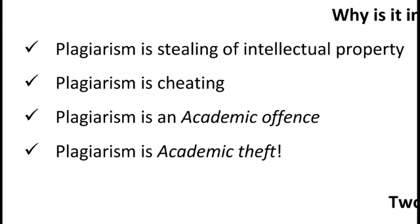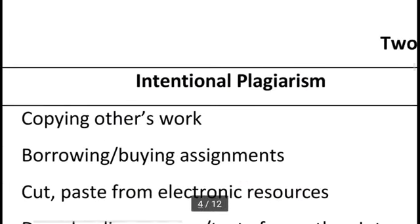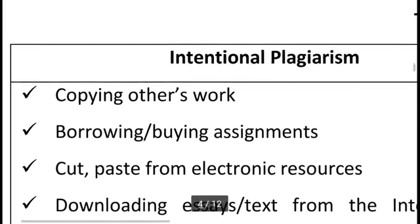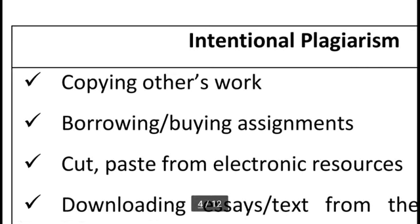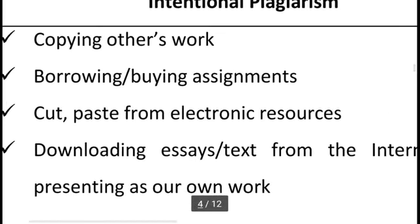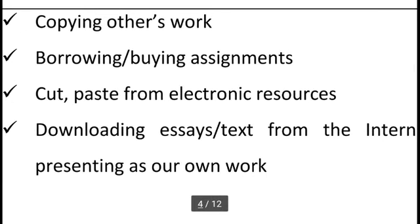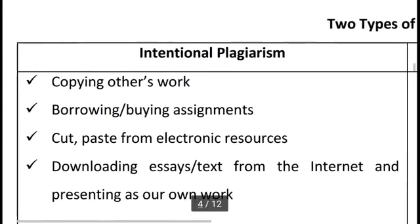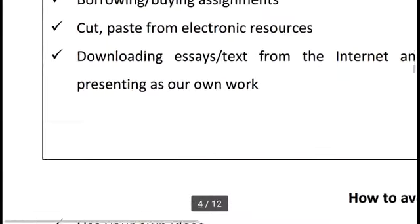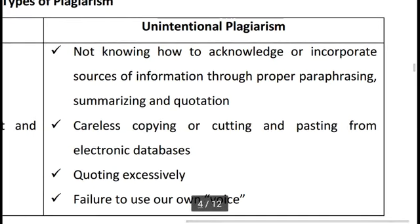There are two types of plagiarism. Intentional plagiarism means copying other works, borrowing or buying assignments, cutting and pasting from electronic sources, downloading essay text from the internet, and presenting it as your own work. Unintentional plagiarism means not knowing how to properly acknowledge or incorporate sources of information.